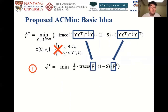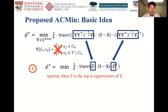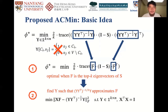Directly solving the objective is hard. Hence, we solve a relaxed version: we do not require Y to be an indicator matrix, and replace the Y-related part with a matrix F. We proved that the relaxed objective is optimal when matrix F is the top-K eigenvectors of matrix S, which means we can first find the top-K eigenvectors of S, and then find an indicator matrix Y such that the Y-related part approximates matrix F well. More specifically, the second step solves the objective function as shown in the bottom formula.